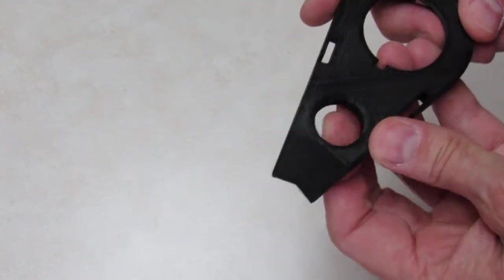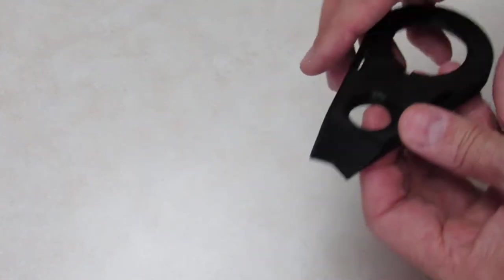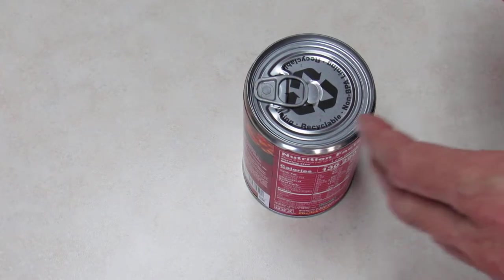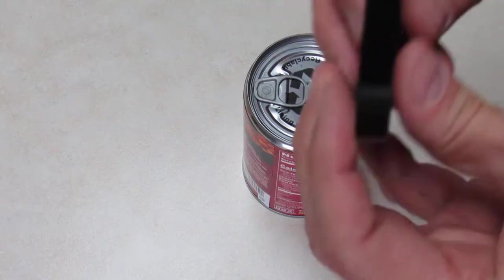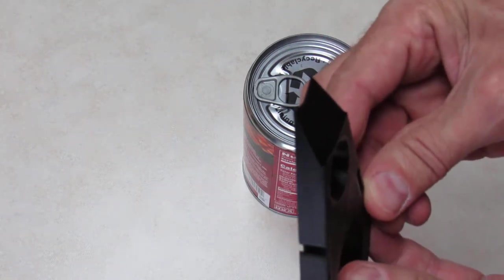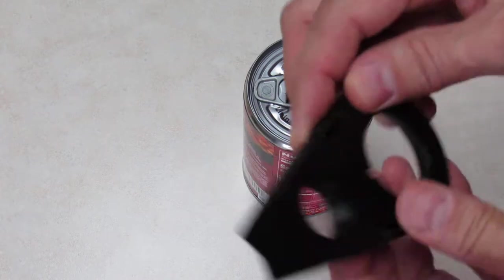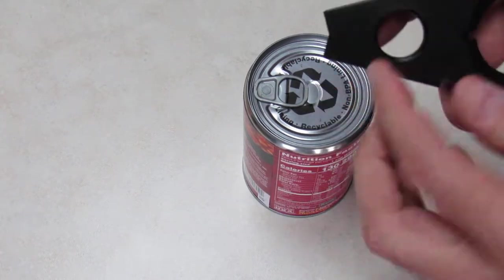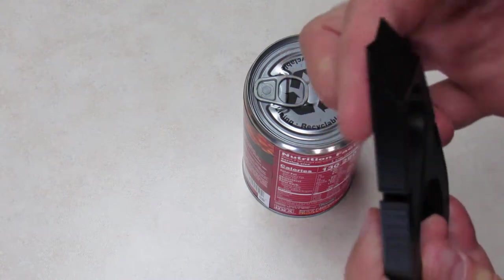Alright, so how do you use this part first? Take a can with a pop-top on it. There's a wedged part of the opener and that slides with the flat side down. Flat side is down.